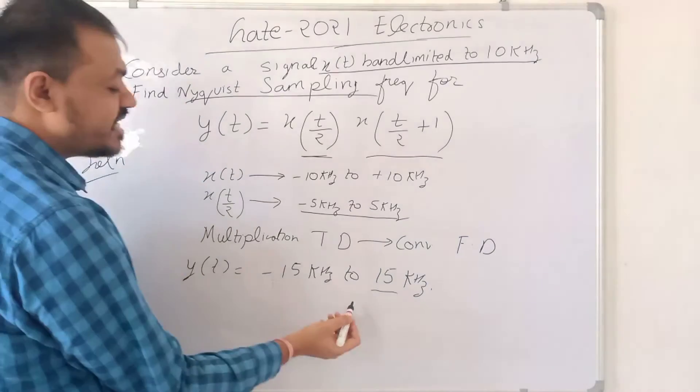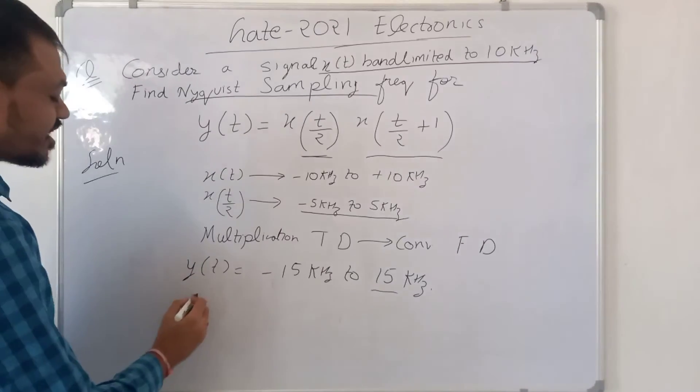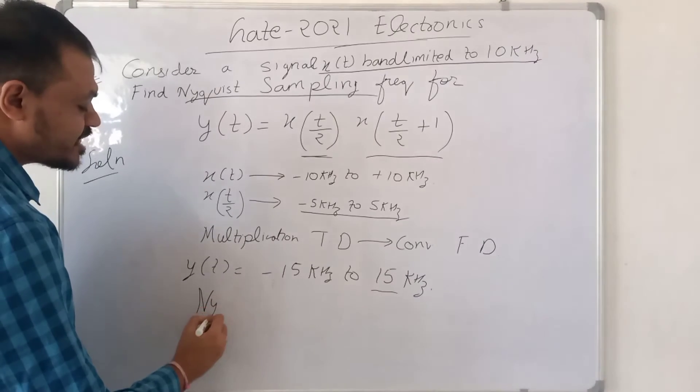So the maximum frequency in Y(t) is 15 kHz. And the Nyquist frequency is simply two times the maximum frequency.